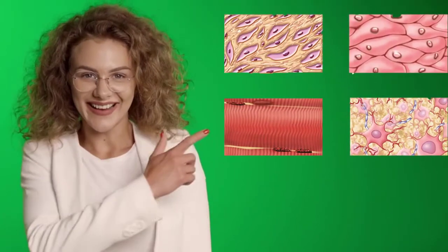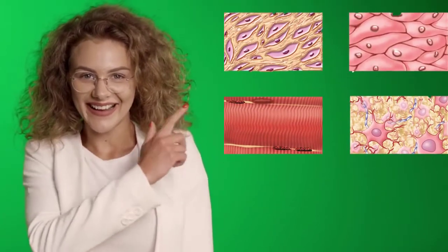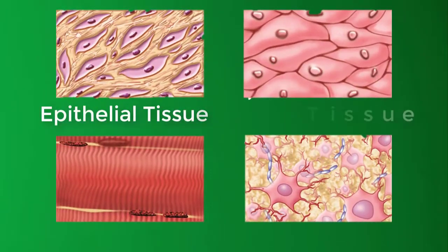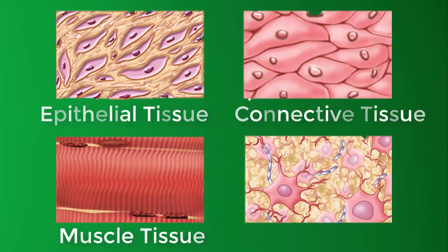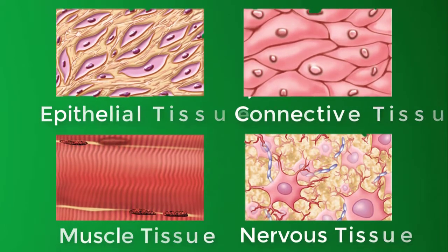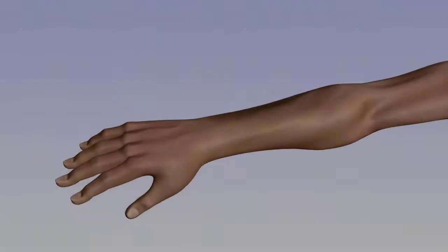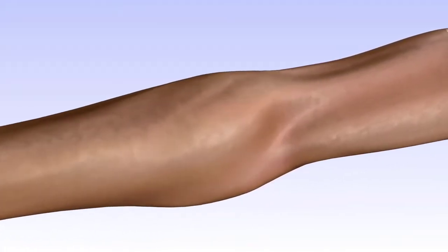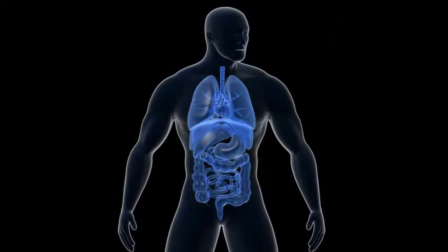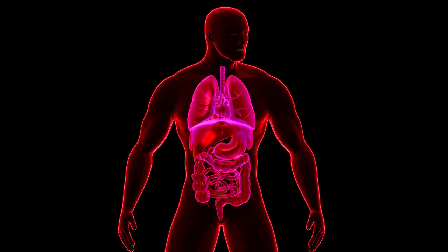The four tissue types are epithelial tissue, connective tissue, muscle tissue, and nervous tissue. Most of your epithelium is considered epithelium proper, which refers to the epithelium that lines the organs, the body cavities, and the inner and outer surfaces of the body.